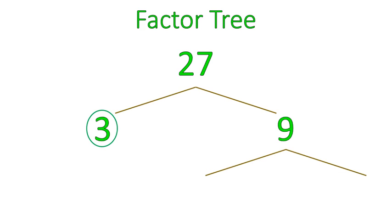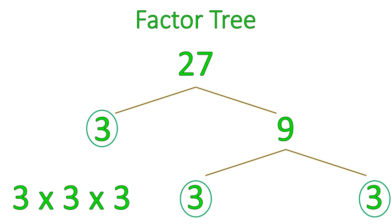9 can then be broken down further into 3 times 3. Now we have 3, 3, and 3. Those are all prime numbers. 3 times 3 times 3 does give us 27. So that is the list of the prime numbers that would multiply together to give us 27.